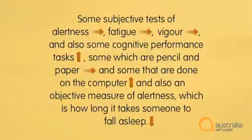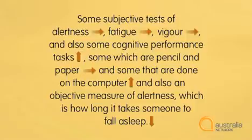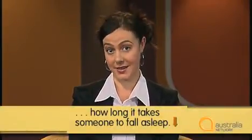Now let's look at one last example of intonation — what happens when we have a list in a sentence. Some subjective tests of alertness, fatigue, vigour, and also some cognitive performance tasks, some which are pencil and paper and some that are done on the computer. And also an objective measure of alertness, which is how long it takes someone to fall asleep. She uses rising and falling tones, and a flat tone for the items in the list — this tells the listener she hasn't finished. For the very last item, she uses falling intonation, which signals the list is finished. We generally use falling intonation for the last item in a list. Of course, intonation varies according to the situation and our attitudes to the topic.